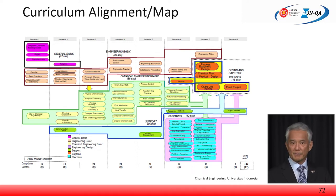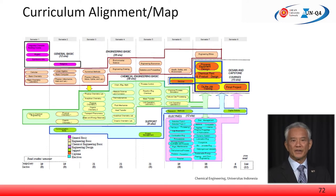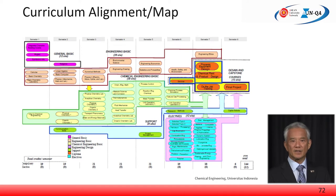The course groups include Engineering Basic Courses, Chemical Engineering Basic Courses, Elective Courses, Support Courses, and Capstone or Thesis Courses. Colour coding and box groupings are used to enhance clarity. Notice the arrows showing the relationship among the various types of courses, and of course the sequencing of the courses from Semester 1 through Semester 8. This is a well-designed curriculum map.